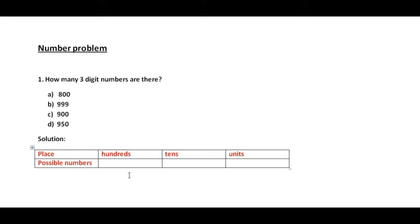Let us see the first question: how many three-digit numbers are there? Now let us be very clear that in the world we have only 10 types of numbers, which are 0, 1, 2, 3, 4, 5, 6, 7, 8, and 9. These are the 10 types of numbers which we have in all.